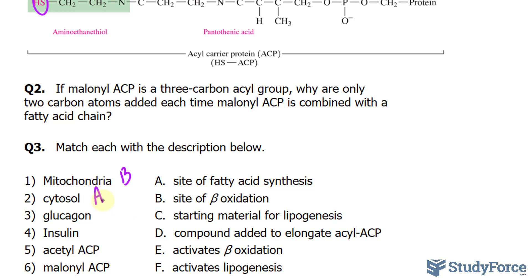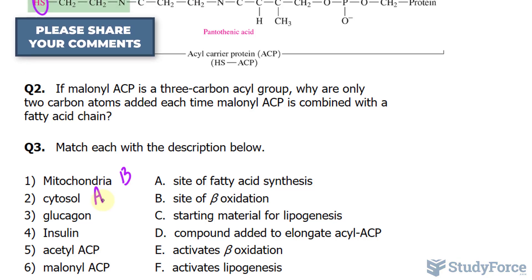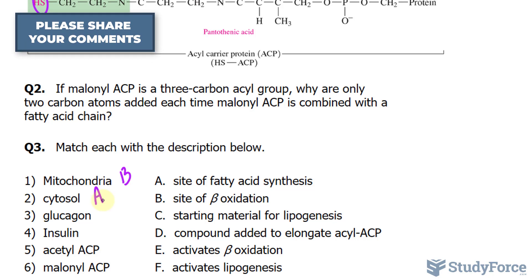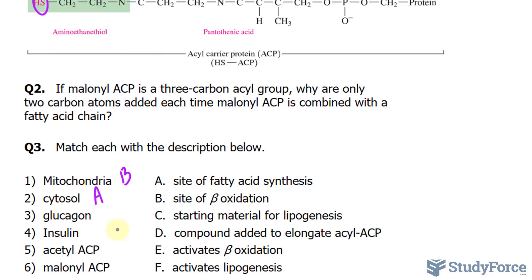Glucagon is a peptide hormone produced by the alpha cells of the pancreas. Its job is to convert glycogen, a polysaccharide compound found in the liver, into glucose. In addition, it's responsible for activating beta-oxidation, so glucagon is E. Insulin is a hormone released from the pancreas when blood sugar levels rise. It allows the cell to become more permeable to glucose and is responsible for lipogenesis — insulin stimulates lipogenesis by activating enzymatic pathways leading to fatty acid synthesis. So insulin is F.